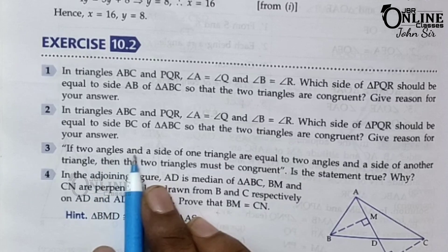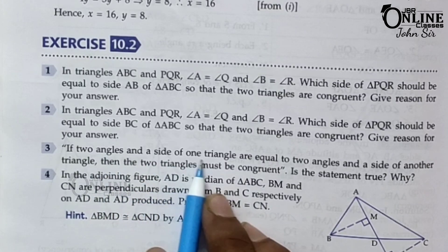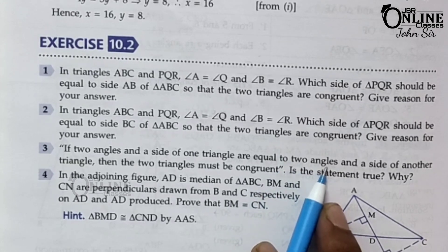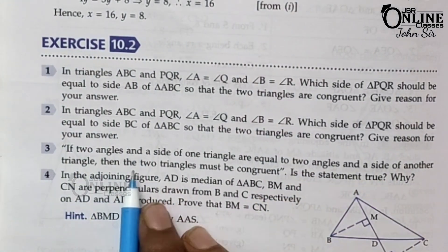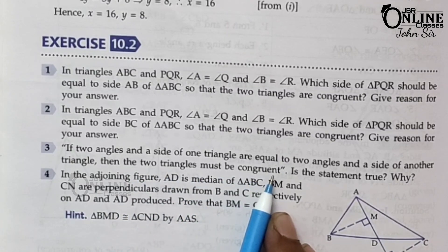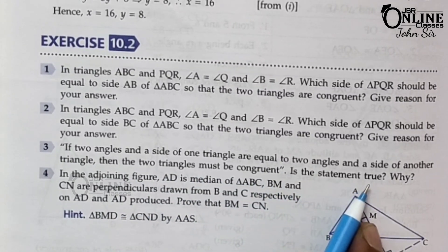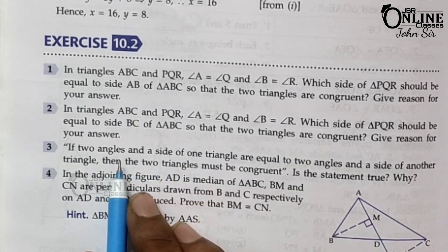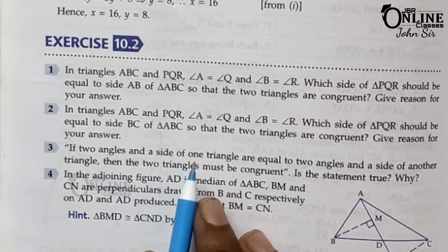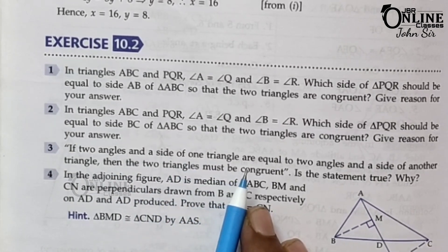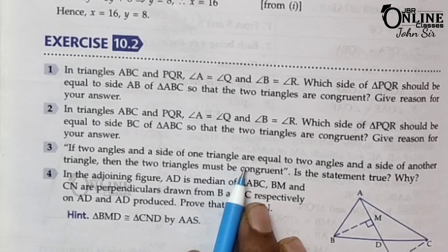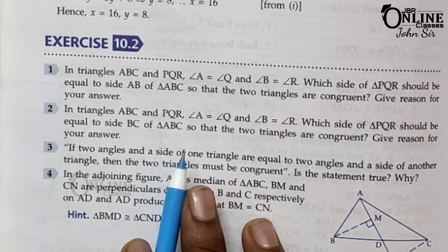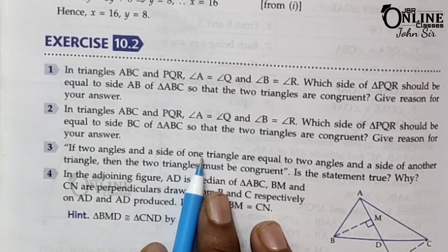The third one: if two angles and a side of one triangle are equal to two angles and a side of another triangle, then the two triangles must be congruent. Is the statement true? Why? The given statement can be true only if the corresponding included sides are equal, otherwise not. This statement will be true only when the corresponding or included sides are equal.